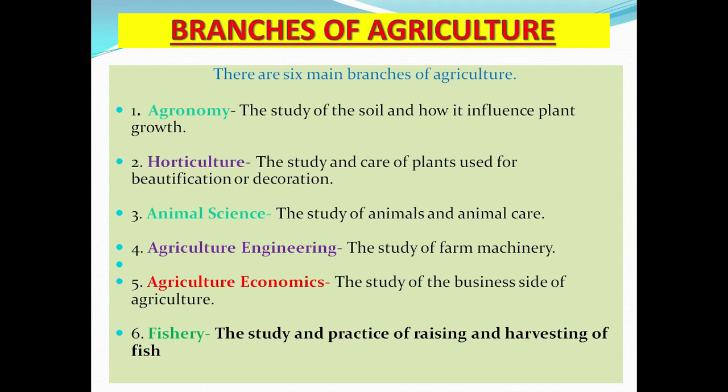Number five, agricultural economics: the study of the business side of agriculture. Persons studying marketing of goods, profit, and sales fall under agricultural economics. Number six, fishery: the study and practice of raising and harvesting fish. Please remember to study these branches and know their definitions.